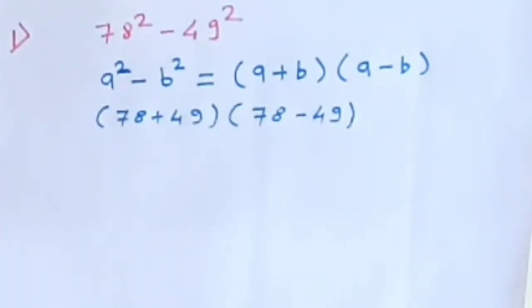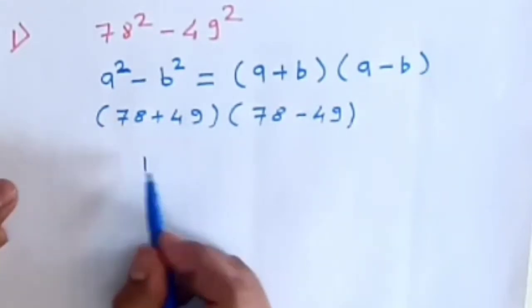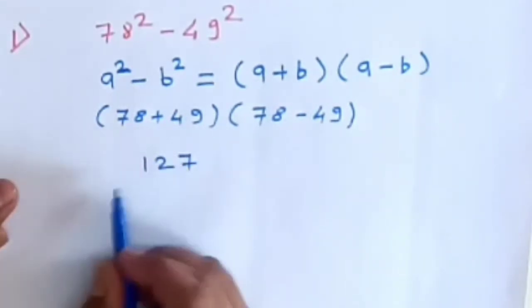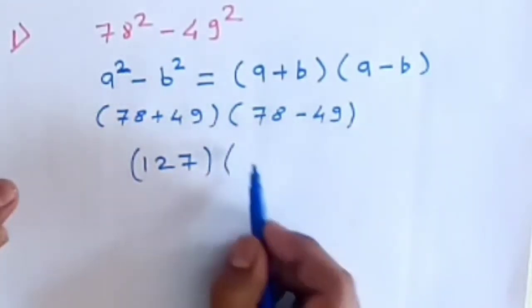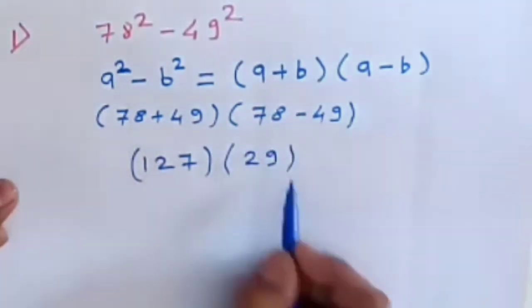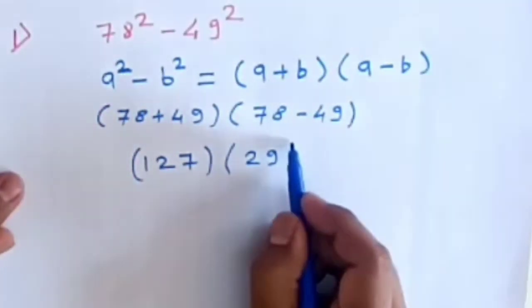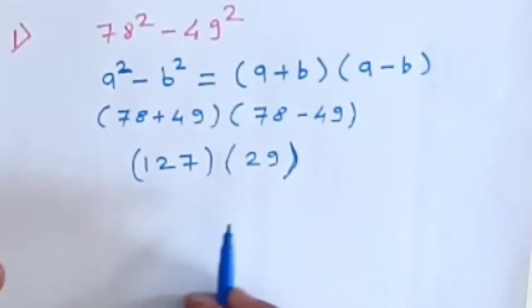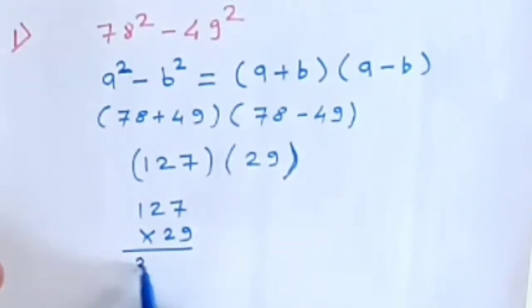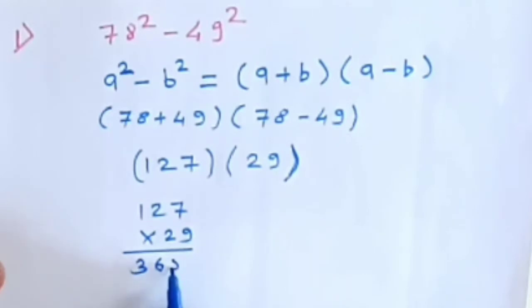After that, addition of 78 + 49 in the first bracket gives us 127, and in the second bracket, subtraction of 78 - 49 gives us 29. Then by performing simple multiplication of these two numbers, 127 and 29, we get the final answer as 3683.